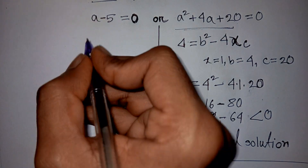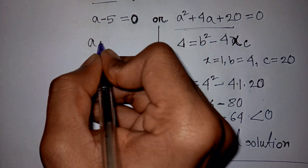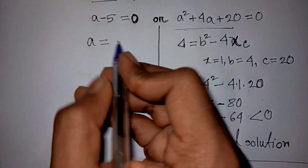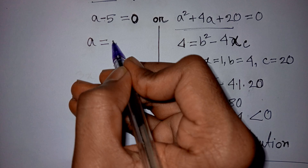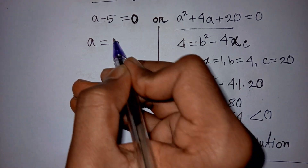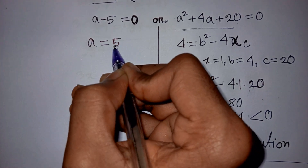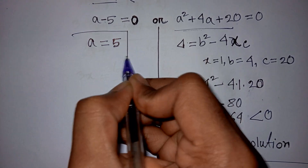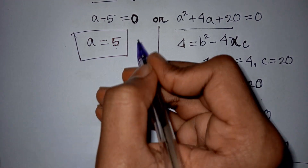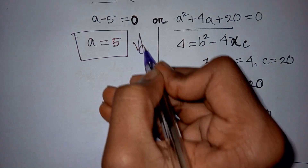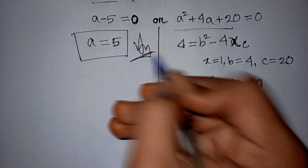Now, from here, a minus 5 equals 0, take minus 5 to the right side, so this will be plus 5. So a equals 5, this is the value of a. This is our final answer.